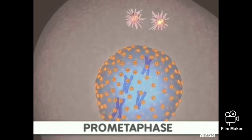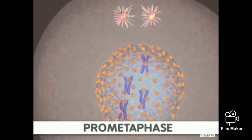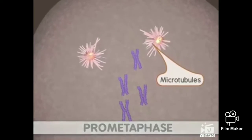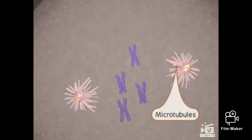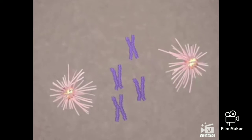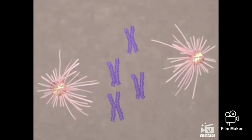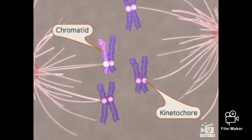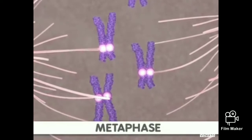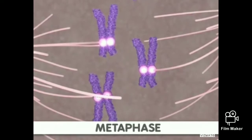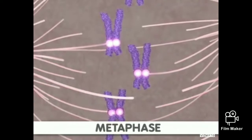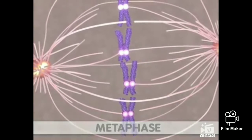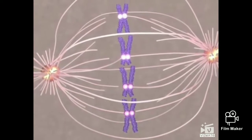Next, prometaphase begins when the nuclear membrane is broken down. At the same time, microtubule strands, or spindle fibers, are growing from the centrosomes. These strands attach to a protein structure called a kinetochore. One kinetochore is attached to the centromere of each sister chromatid. Next comes metaphase. During this stage, the sister chromatids align along the center of the cell, so that both chromatids face toward opposite poles of the cell. The sister chromatids are now ready to be separated.